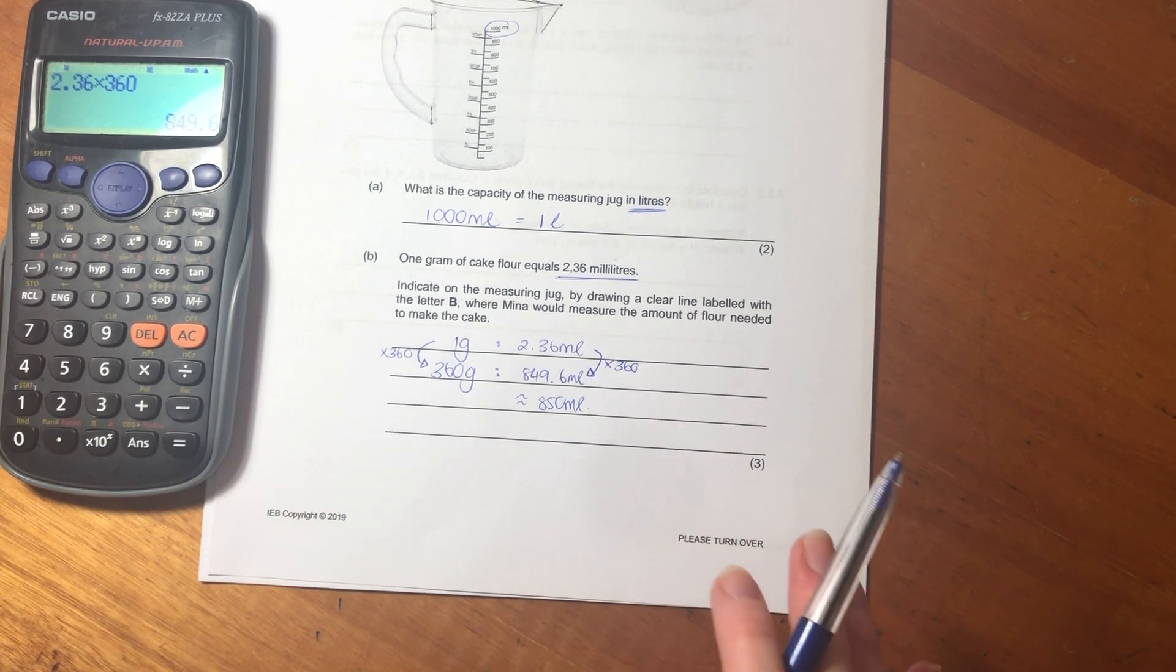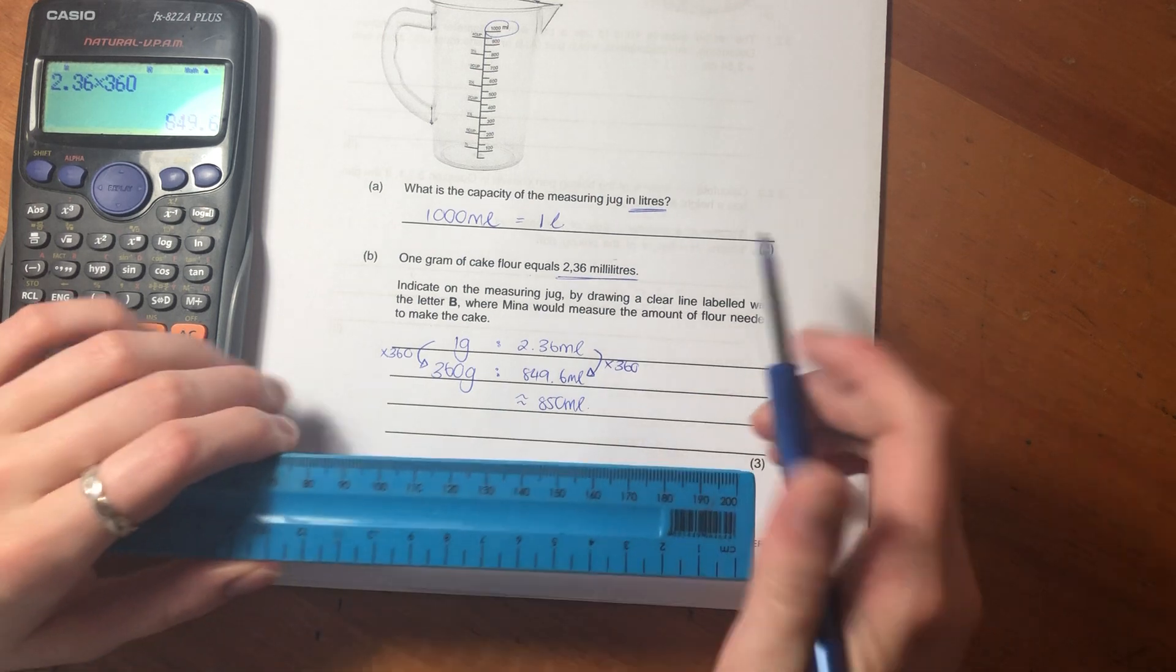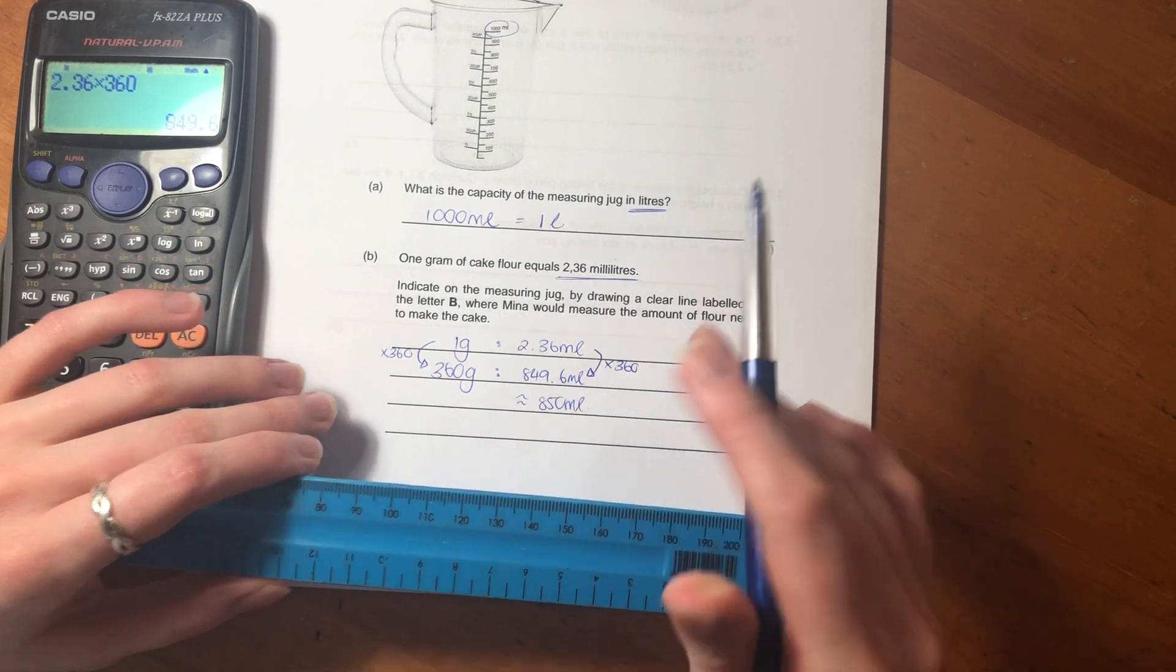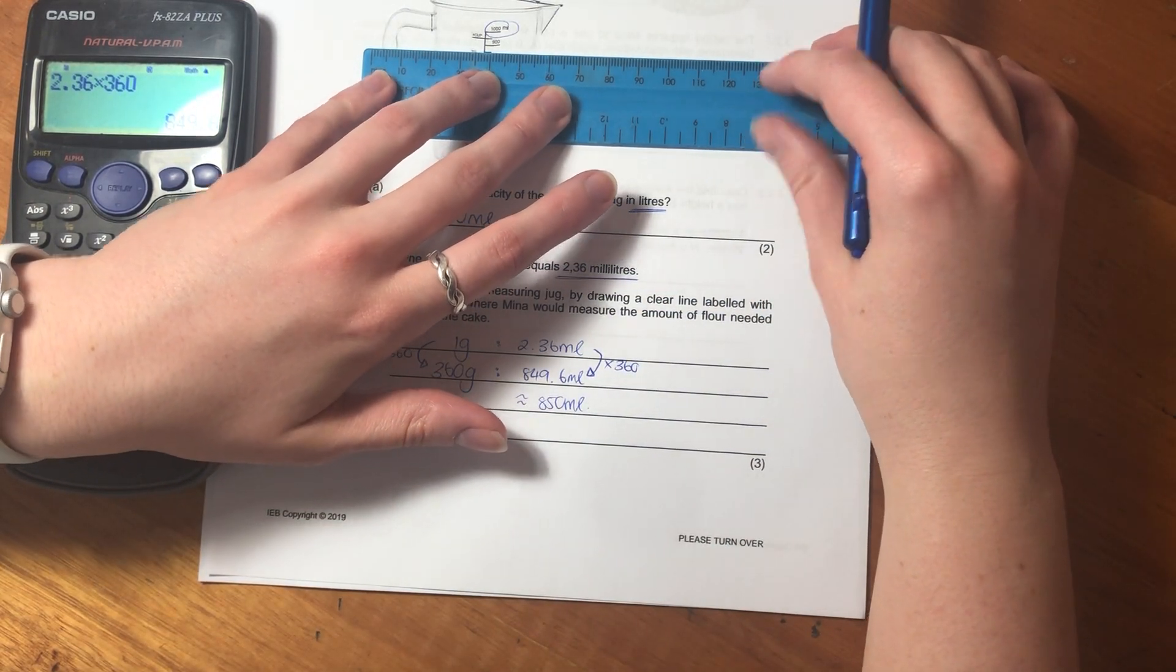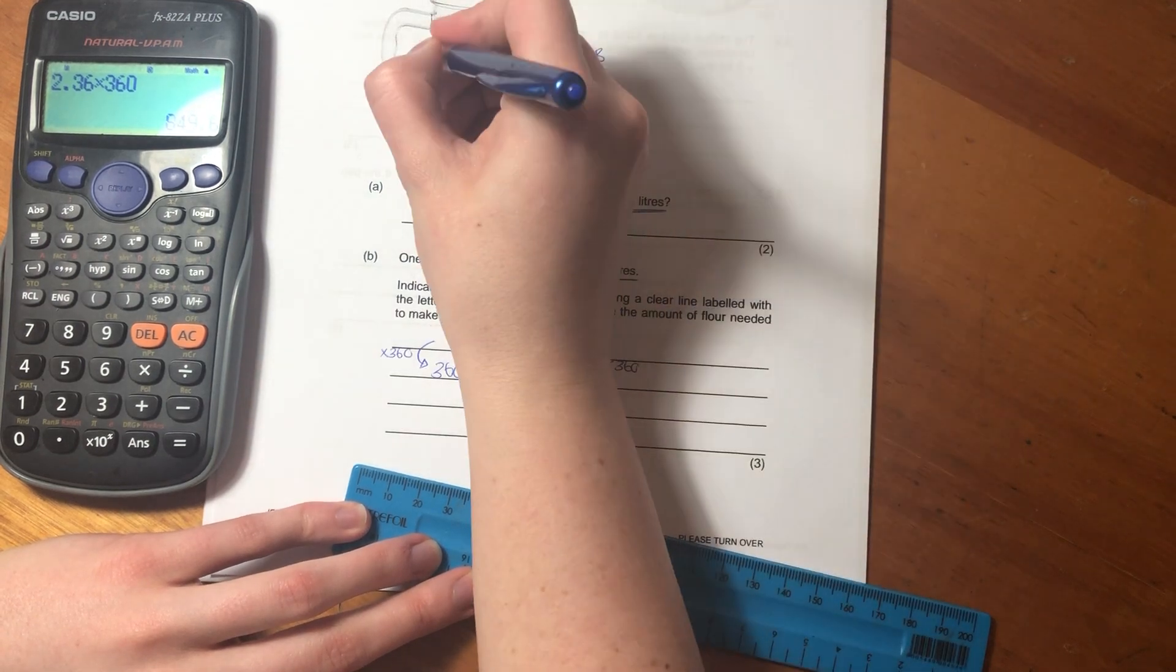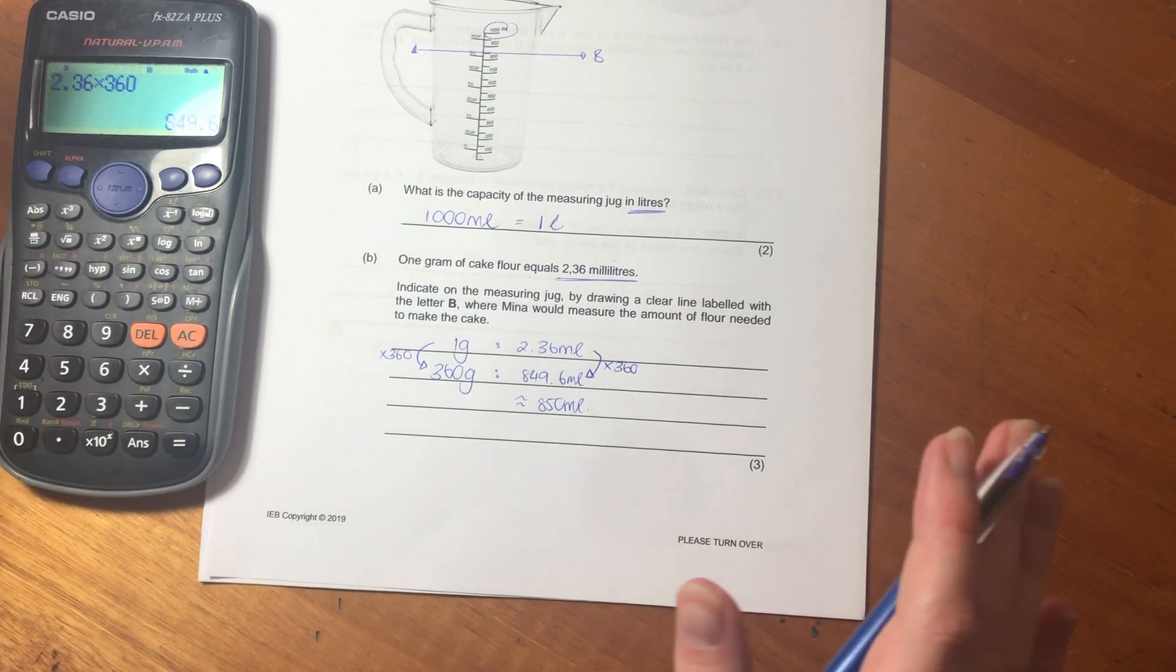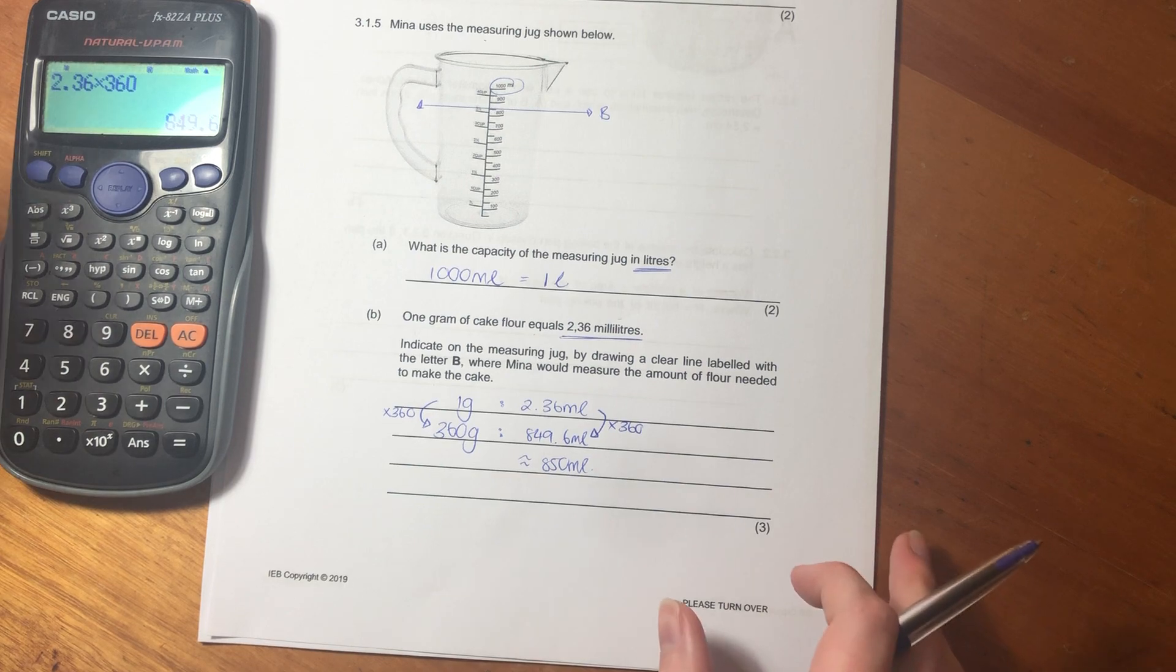Hope you followed that guys. What we do to the one side we have to do to the other. We're not finished. We have to draw a line. Unfortunately I seem to have lost my ruler. Oh no, I found it. Excellent. It says by drawing a clear line labeled with the letter B. Let's find 850. 850 is between 800 and 900, so we're going to say B. I don't know if you have to put arrows, but I'm just putting arrows. It looks nice for me. I don't know if that's what was required, but that is the final answer for this question.